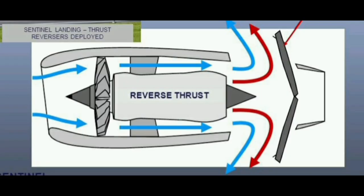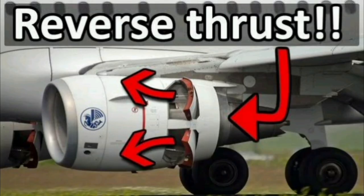Thrust reversal, or reverse thrust, is a temporary diversion of an aircraft jet engine's thrust. It opposes the forward travel of an aircraft, causing it to decelerate. Many jet aircraft have thrust reverser systems to help slow down the aircraft just after touchdown. Thrust reversers reduce wear on the brakes and enable shorter landing distances.